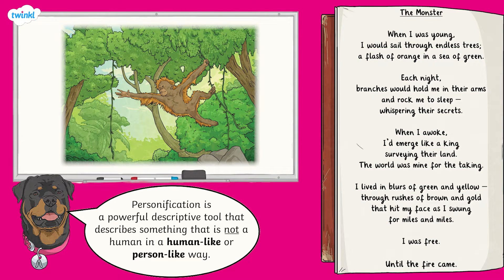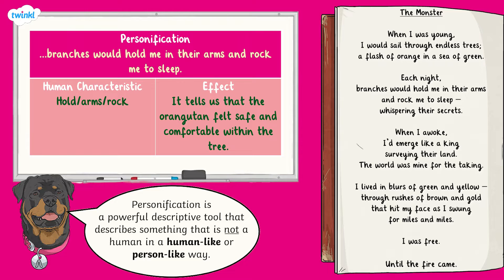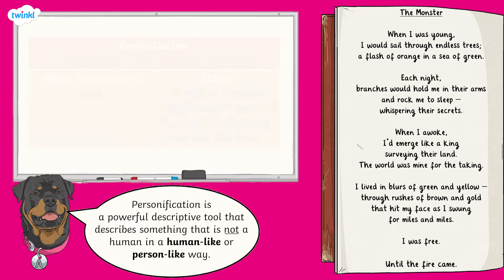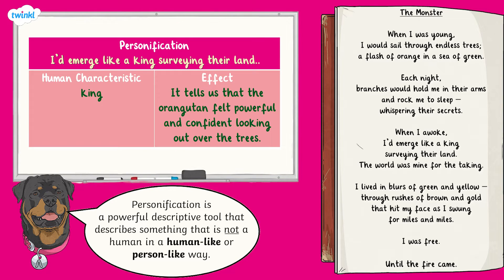The beginning of this poem has lots of examples of personification. Let's take a look at the first verse, 'Each Night.' The author has personified the branches of the trees. Although tree branches don't have arms and can't hold people and rock them, the description gives the impression that the orangutan feels safe and comfortable within the tree. The author also uses personification when they write, 'I'd emerge like a king, surveying their land,' giving the impression that the orangutan felt powerful and confident when looking out over the trees.